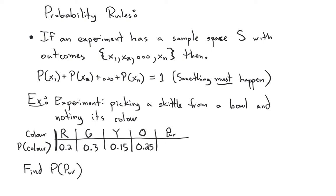Imagine we have an experiment where we pick a Skittle, which is a fruit candy, from a bowl and note its color. The possible colors are red, green, yellow, orange, and purple. The probability of red is 0.2, green is 0.3, yellow is 0.15, and orange is 0.25. What's the probability of picking a purple Skittle?